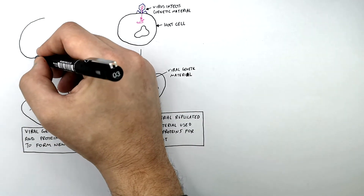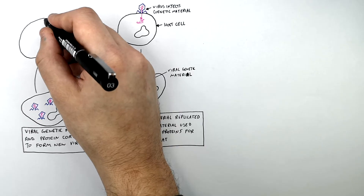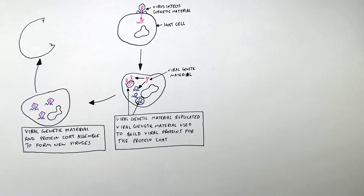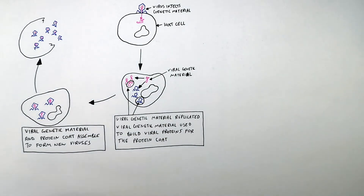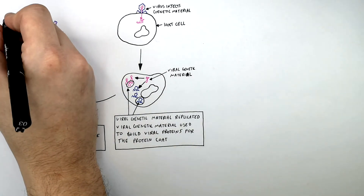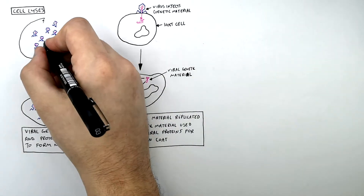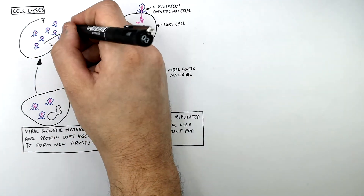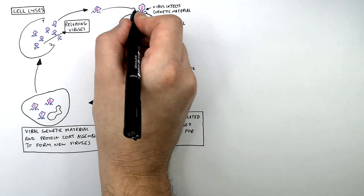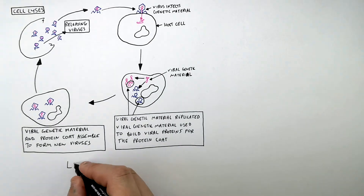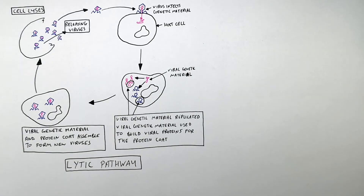This is cell lysis. Cell lysis is when the cell splits open, and the newly formed viruses leave the cell and infect other cells. When lysis releases the viruses, the lytic pathway starts again as each new virus binds onto another cell, injects its genetic material, and the lytic cycle continues.